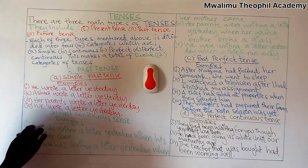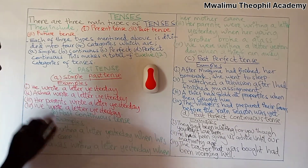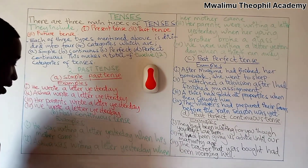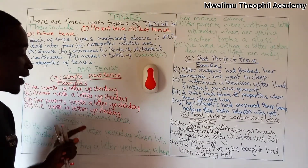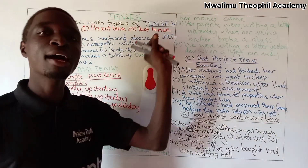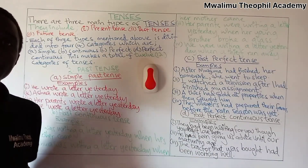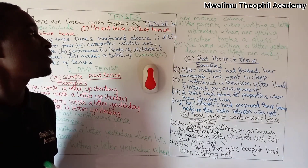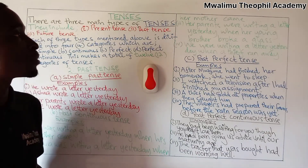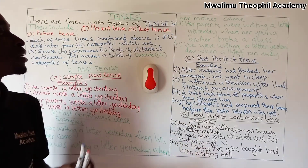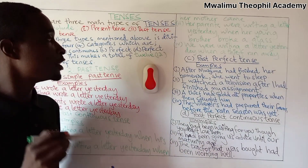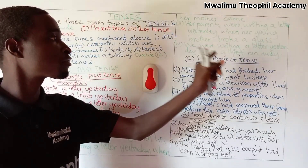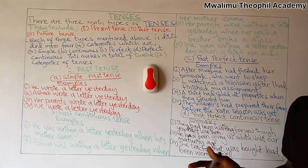Our first example: he was writing a letter yesterday when his mother came. A second example: Ashura was writing a letter yesterday when her mother came. A third example: her parents were writing a letter yesterday when her young brother broke a glass. Our fourth example: we were writing a letter yesterday when a thief ran away.